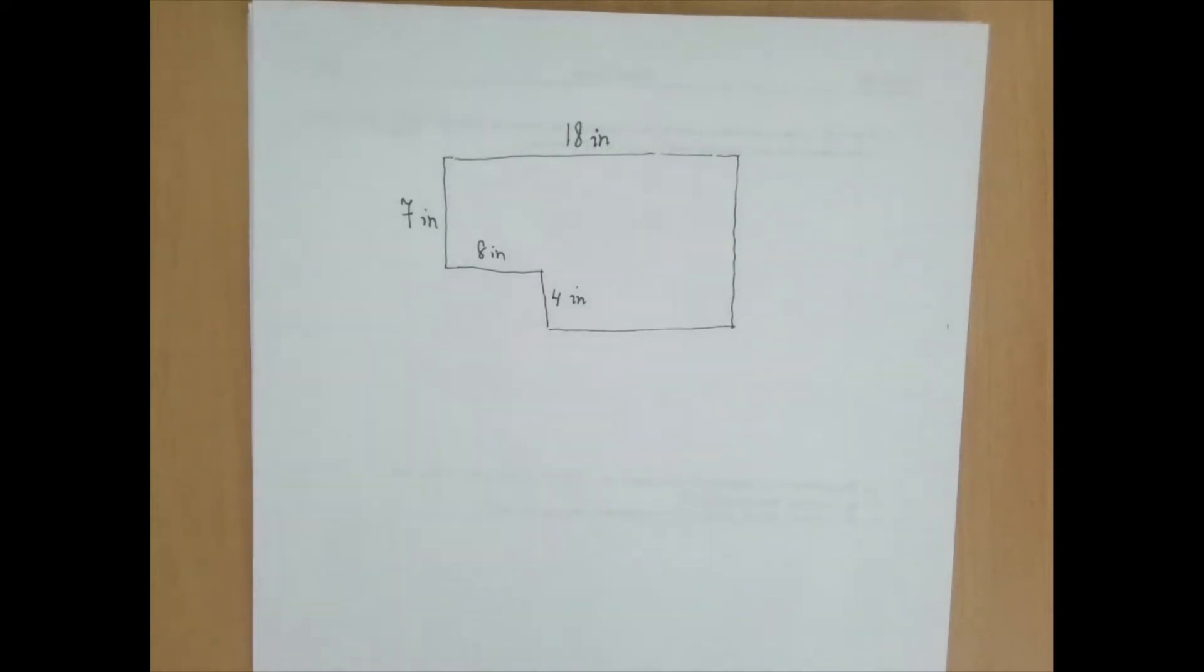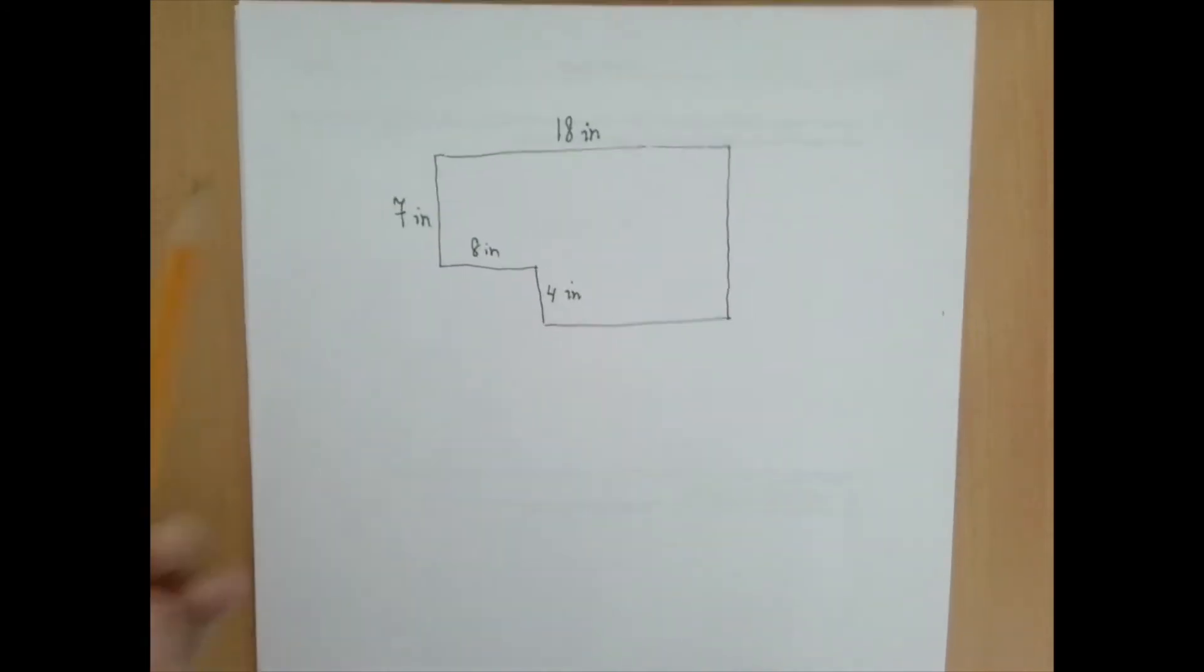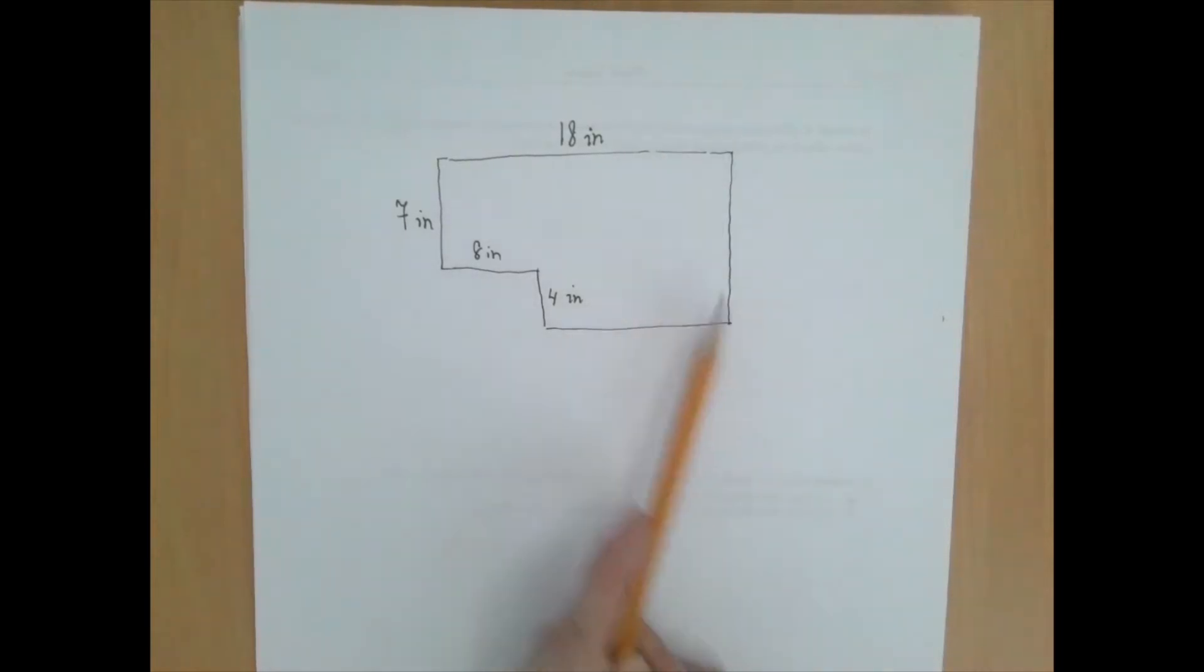The perimeter of an object is the length of its boundary. It's a fencing question. How long of a fence do we have to buy around this object if we wanted to fence around it? So we need to add all sides, but the problem is that we don't know how long this is and how long this is, right?